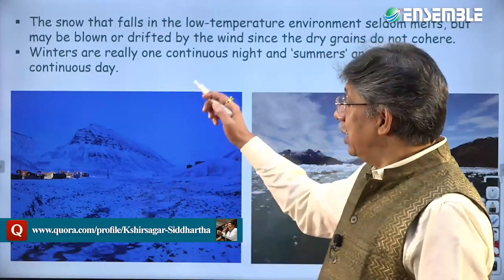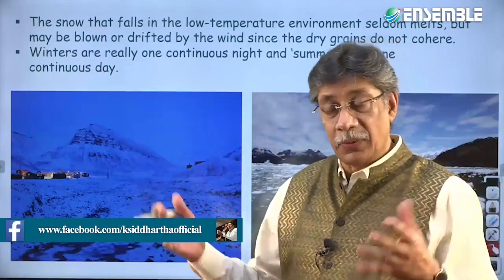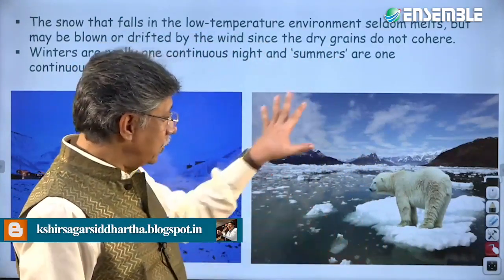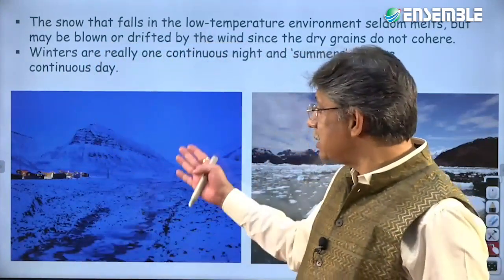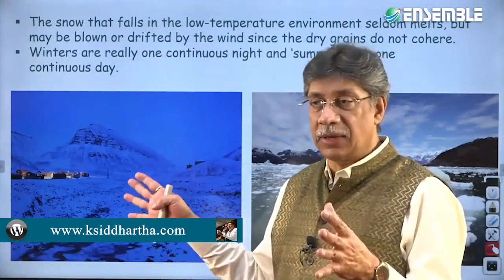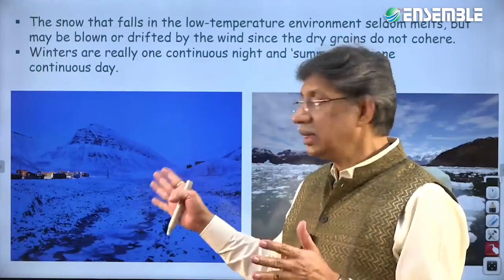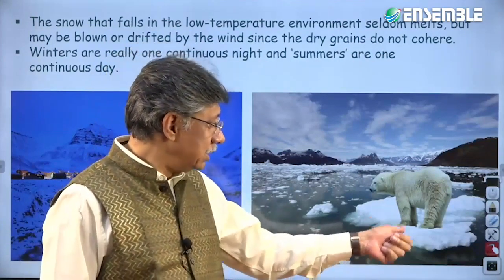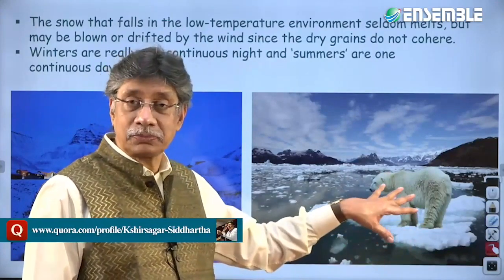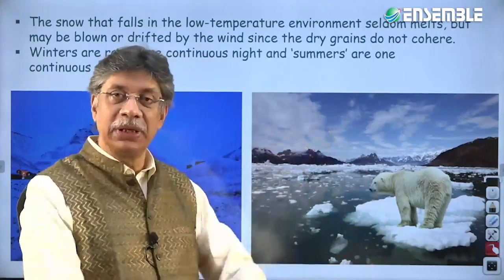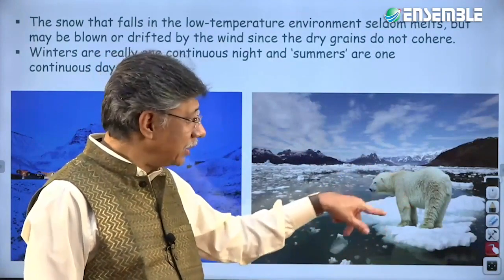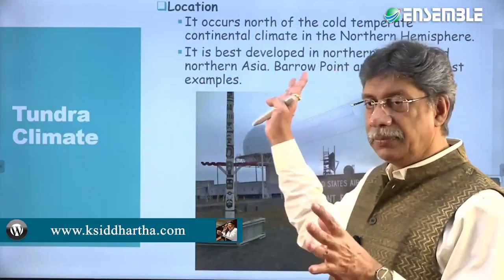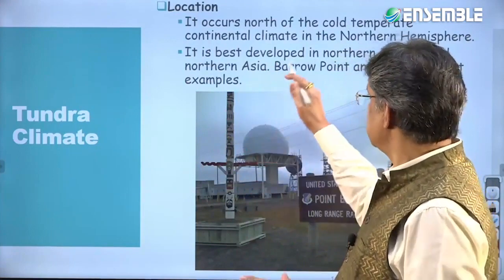Winters in polar regions are one continuous night and summers are one continuous day — six months of daytime and six months of nighttime. The landscape features temperatures of minus 40, 50, or 60°C, and creatures like penguins keep moving from one block of ice to another and jumping into water. The ice cap climate location is one type; the second is tundra climate, whose location is north of the cold temperate continental climate and best developed in northern Asia.